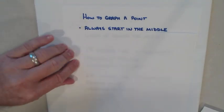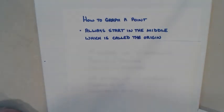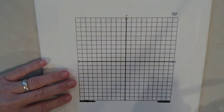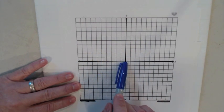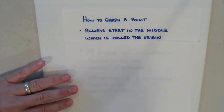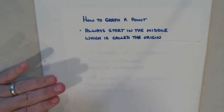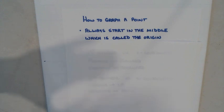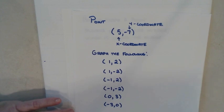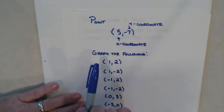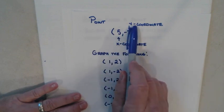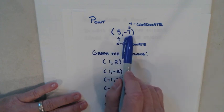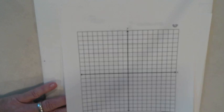You're always going to start in the middle, and that middle is always called the origin. That's where you always start when you go to graph something. They are going to give you two numbers surrounded by parentheses with a comma in between — like this. This first number will always be my x-coordinate, and the second one will always be my y-coordinate. I'm going to use both of these numbers to plot a point on the graph.